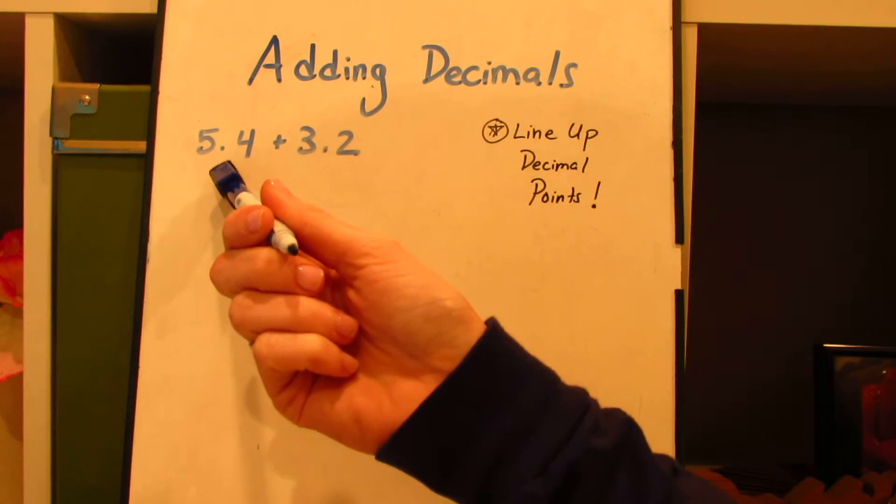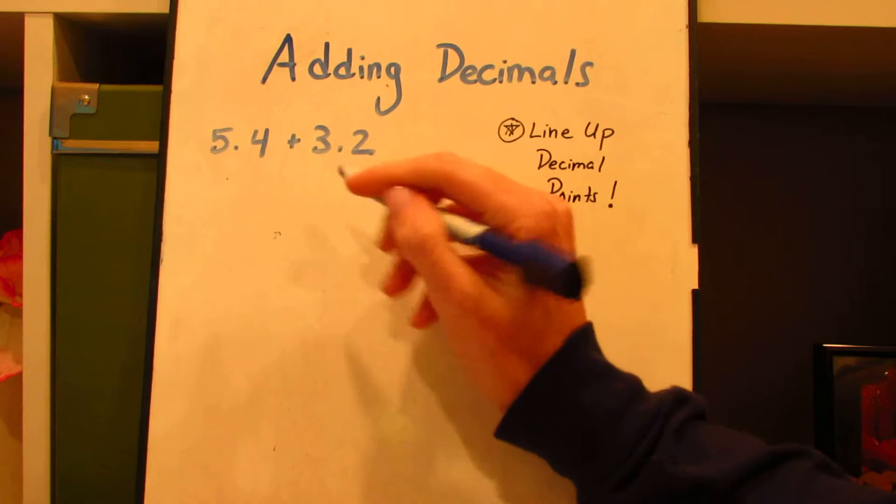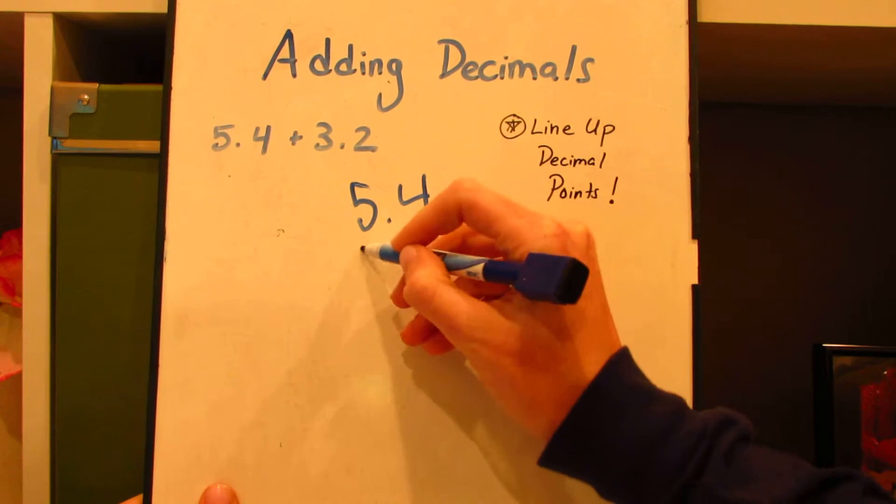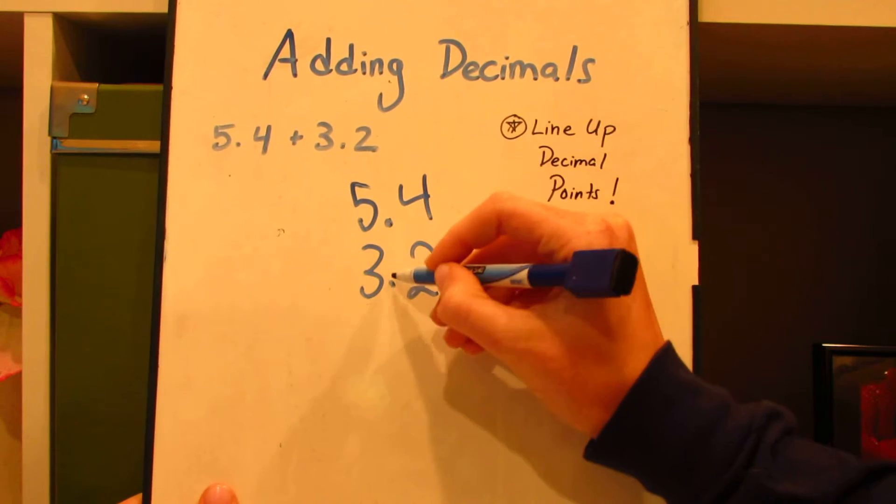5 and 4 tenths plus 3 and 2 tenths. I'm going to write it vertically in order to solve, lining up my decimal points.